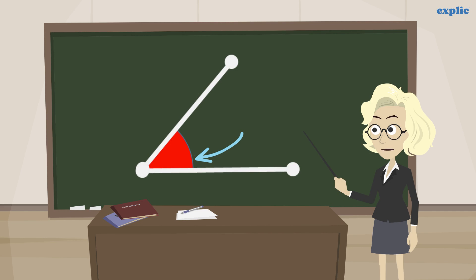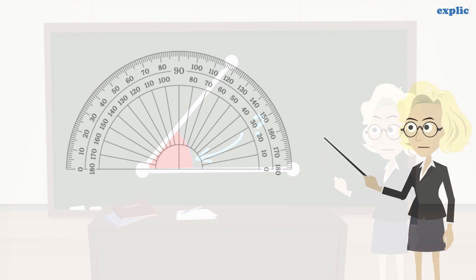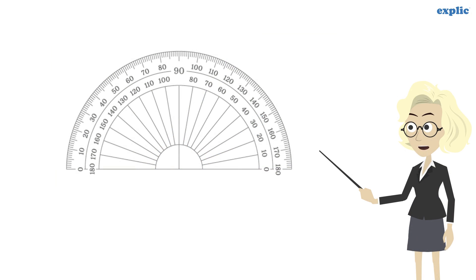To measure an angle, we use a protractor. The protractor is a simple measuring tool which is semicircular in shape, with 0 degrees to 180 degrees marks on it.